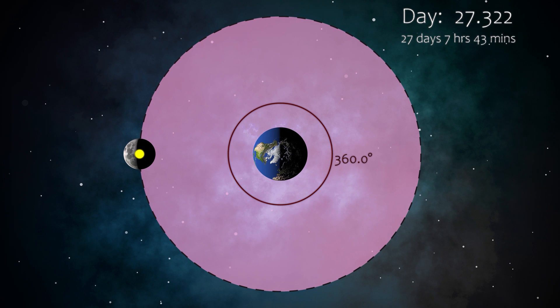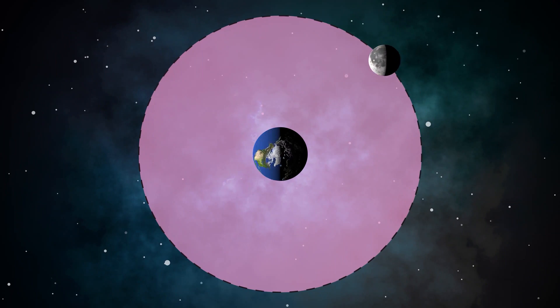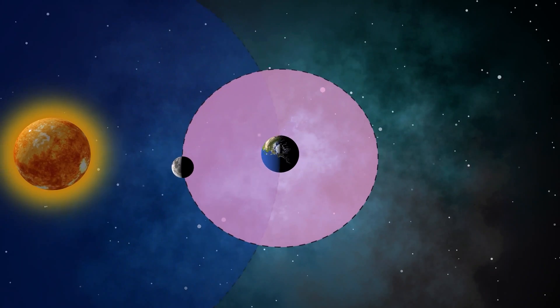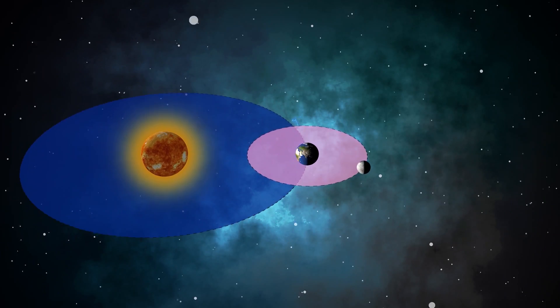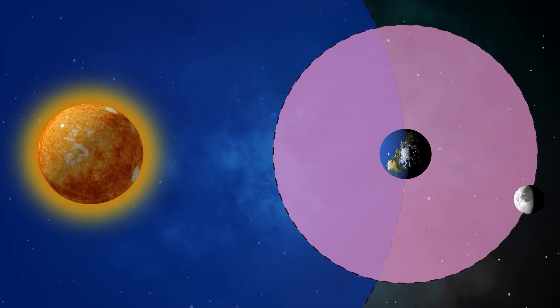This duration is called the sidereal month. Now let's see what a synodic month is. For that we need to see a bigger picture and we have to consider all three: the sun, the earth, and the moon. Let's start when the moon is aligned with the earth and sun.